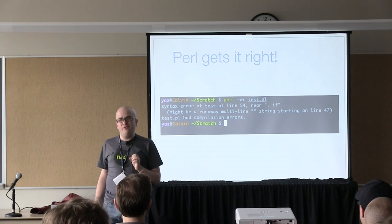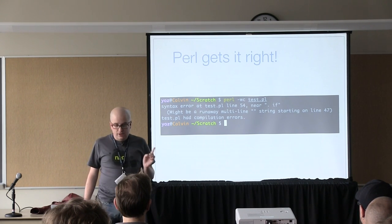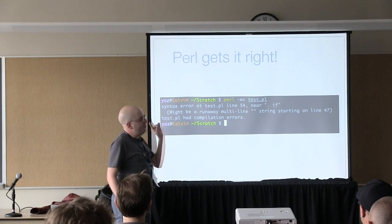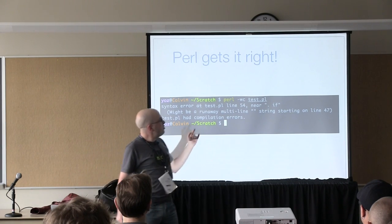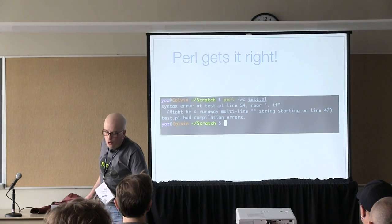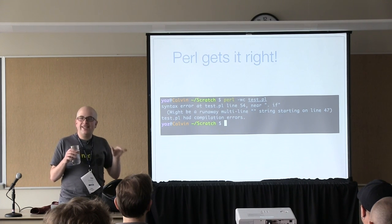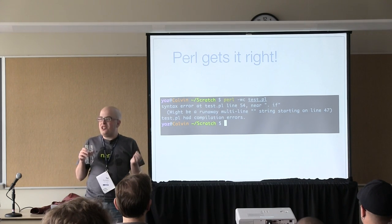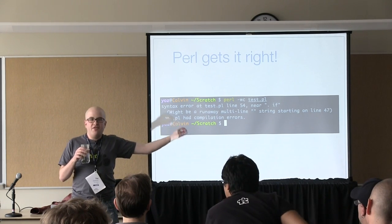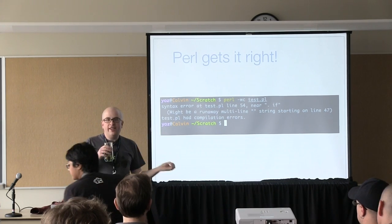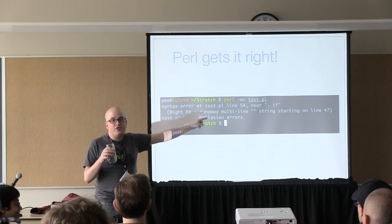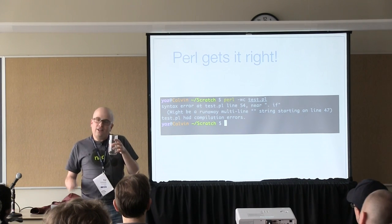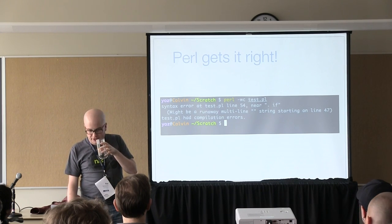There are still certain things about Perl that I really miss, and this is one of them. This is a beautiful error message. What we've got is a syntax error where it's saying the error was detected at line 54, but in parentheses it's making a guess — it's not certain, but the bug may actually be on line 47. I love this. If you write compilers or debuggers and have the chance to do a little extra work to do this, please do. You will save so many coding-years of time for all the people using your software.